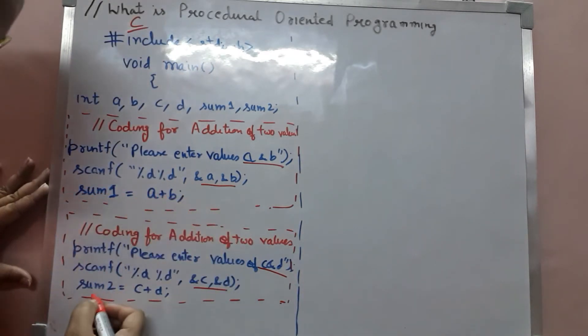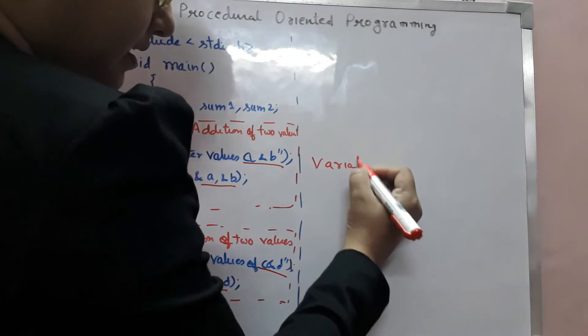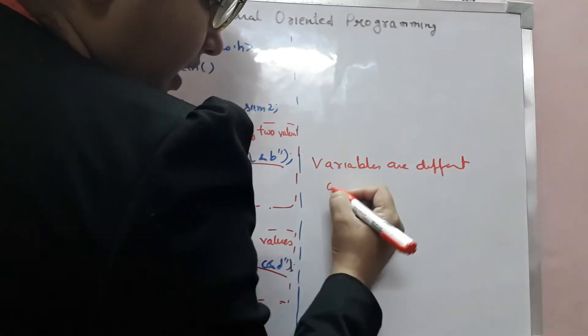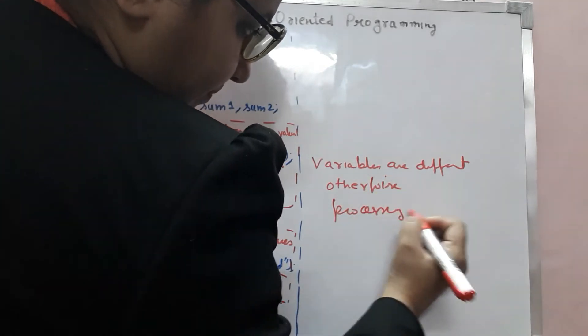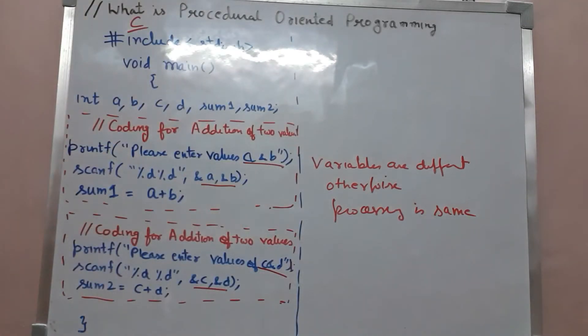Sum1 equals to A plus B. Sum2 equals to C plus D. That means, only the variables are different. Otherwise, processing is same. They are processing same thing.